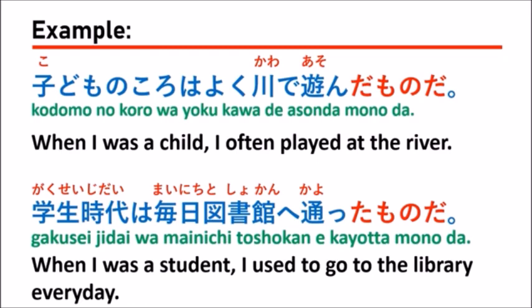通ったものだ is used to explain a situation that happened in the past, not the present. You can use it to express and explain feelings about what happened in the past — with yourself, a friend, or anyone — describing what you used to do.